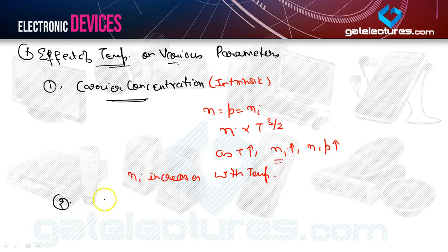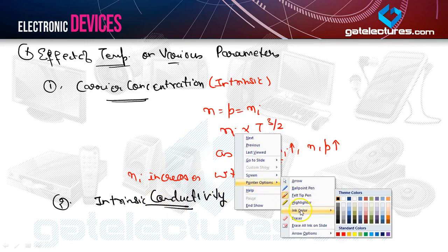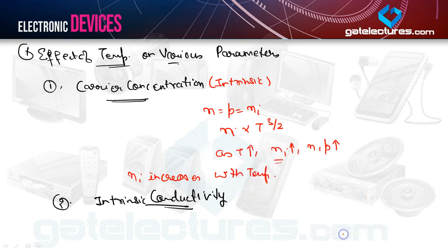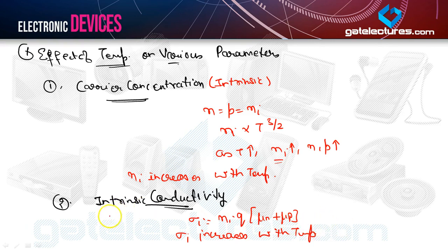The second topic is the effect of temperature on intrinsic conductivity. Intrinsic conductivity sigma_i equals n_i * q * (mu_n + mu_p). Since sigma_i is proportional to n_i, if n_i increases with temperature, sigma_i also increases with temperature for an intrinsic semiconductor.